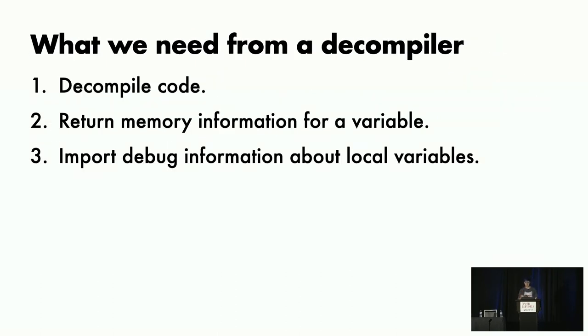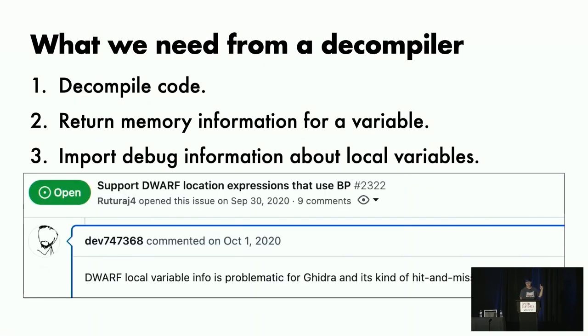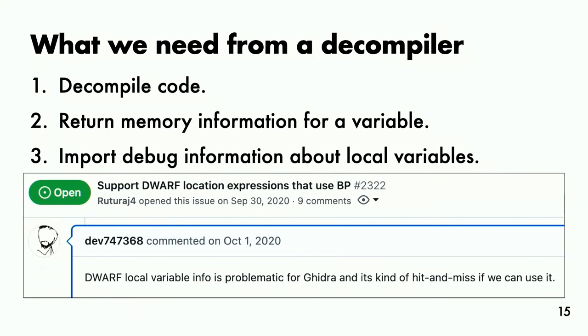I understand that Hexrays is relatively expensive, and you might be wondering why we didn't use a more affordable option like Ghidra. There's nothing that limits this technique to a specific decompiler. The only requirements are that it can decompile code, return memory information for a variable, and import debug information about local variables. Hexrays does all three of these, but Ghidra does not do the last one well. I do not know why this issue has been around since 2020 and not resolved. No disrespect to the Ghidra developers, I think they're doing a great job. But if you want to use DIRTY with Ghidra, you'd have to first fix this issue. If you develop for Ghidra or know anyone who does, you might want to let them know about that.